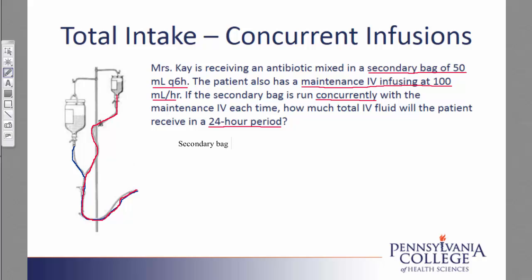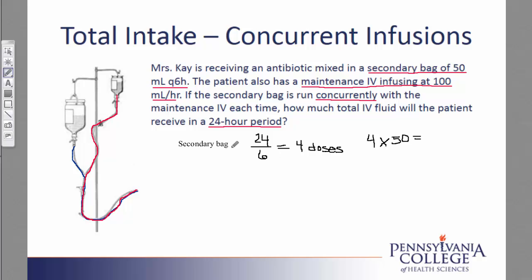First, we will work with the secondary bag. Because we are working with a 24-hour time period and it is to be given every 6 hours, we can take 24 divided by 6 and calculate that the patient will receive 4 doses of the medication, or 4 bags of the medication. Each individual bag is 50 milliliters, so we'll take the 4 bags times 50 milliliters to calculate that the total amount for the secondary bag is 200 milliliters.